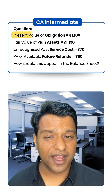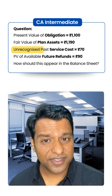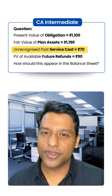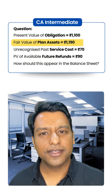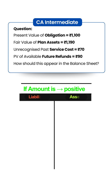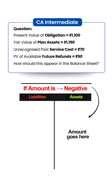We will start with the present value of obligation, reduce the unrecognized past service cost, and again reduce the fair value of plan assets. If this amount is positive, it goes on the liability side of the balance sheet. But if this amount is negative, it will appear in the balance sheet as an asset.